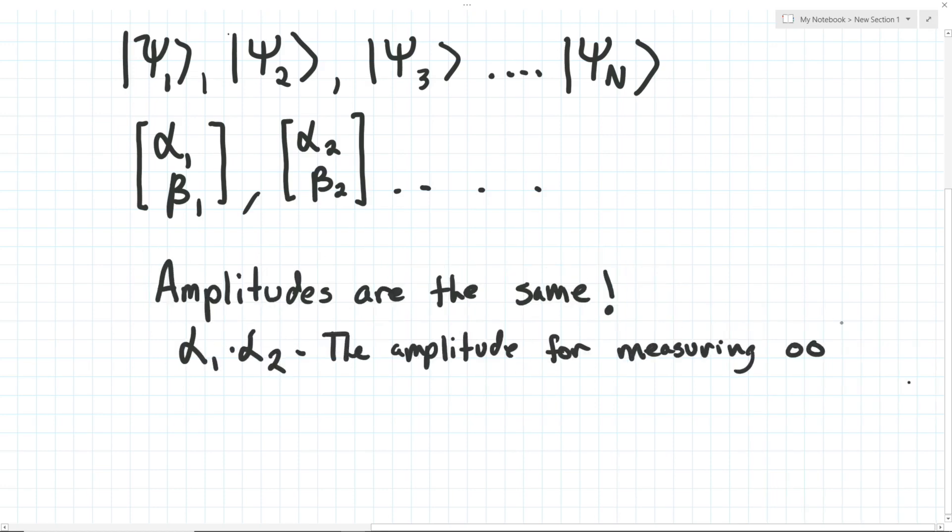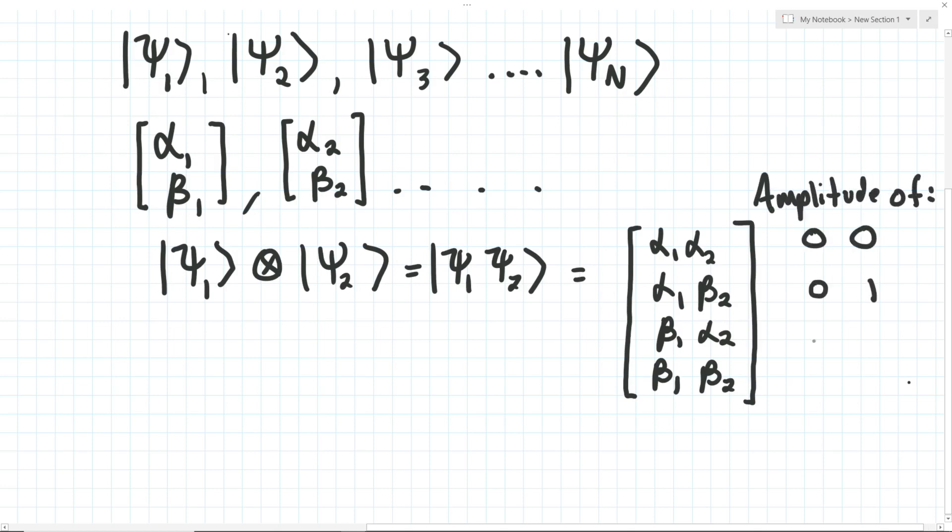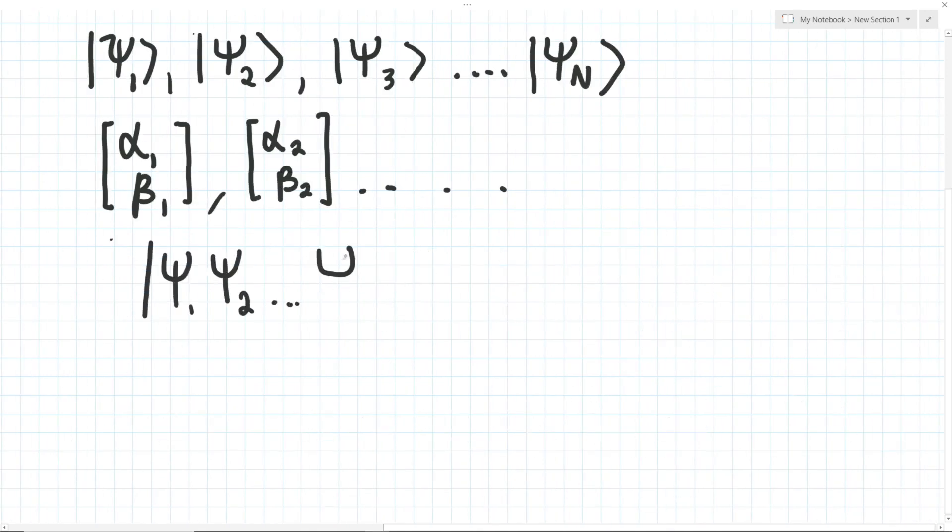So when we take the tensor product of two qubit state vectors, we get a new vector of length 4, where each entry is the amplitude of the 0, 0, 1, 1, 0, and 1, 1 state, respectively. Now, if we have three qubits, what can we do? The same thing! We can use the tensor product to combine any amount of qubits.